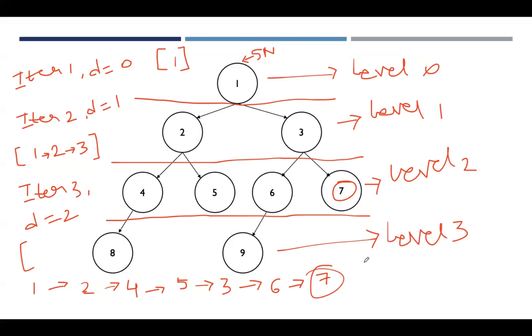Here, no need to increment the depth again because we already reached the goal node. Suppose if the goal node is at level 3, say if it is 9, then again we need to increment depth by 1 and you need to implement iteration 4.